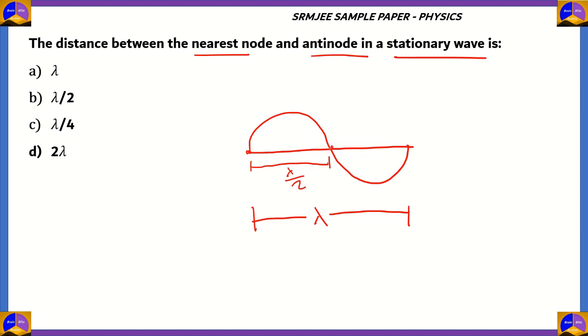So therefore, both of these halves will have a value of lambda by 2. Now the nodes are the points on the stationary wave that stay in the mean position, and the antinodes are these points which are at the extreme position. Now, since the antinode is present in the middle of the two nodes, the distance between an antinode and a node has to be half of the distance between two nodes, which is lambda by 2. So therefore, the distance between a node and an antinode is lambda divided by 4. Option C is the correct option.